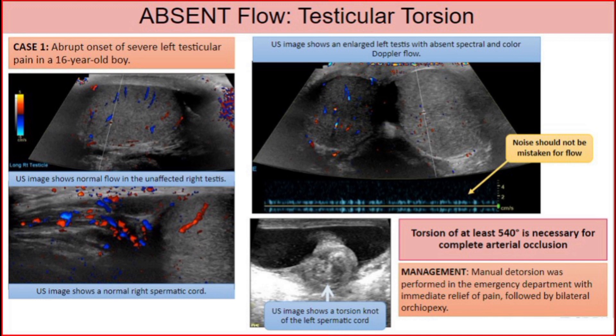Absent flow — testicular torsion. Case 1: Abrupt onset of severe left testicular pain in a 16-year-old boy. Images on the left show ultrasound with normal flow in the unaffected right testis, and below is an ultrasound image showing a normal right spermatic cord. Torsion of at least 540 degrees is necessary for complete arterial occlusion. Management: manual detorsion was performed in the emergency department with immediate relief of pain, followed by bilateral orchiopexy.